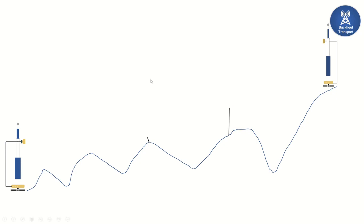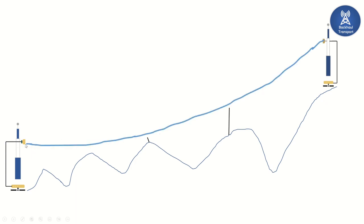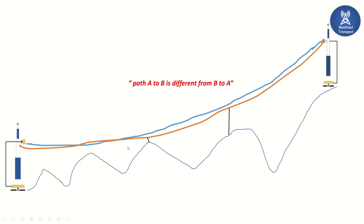In summary, the microwave beam travels differently from site A to site B compared to site B to site A. For example, an obstacle not touched by the beam going from A to B may be touched by the beam going from B to A. Always remember that the path from site A to site B is different from the path from site B to site A.